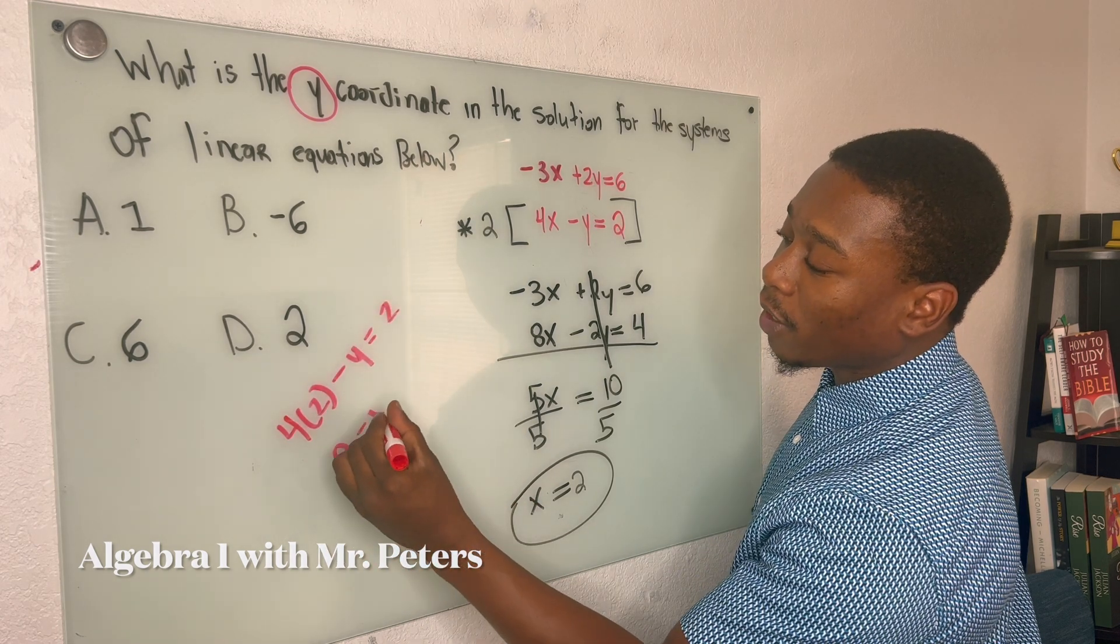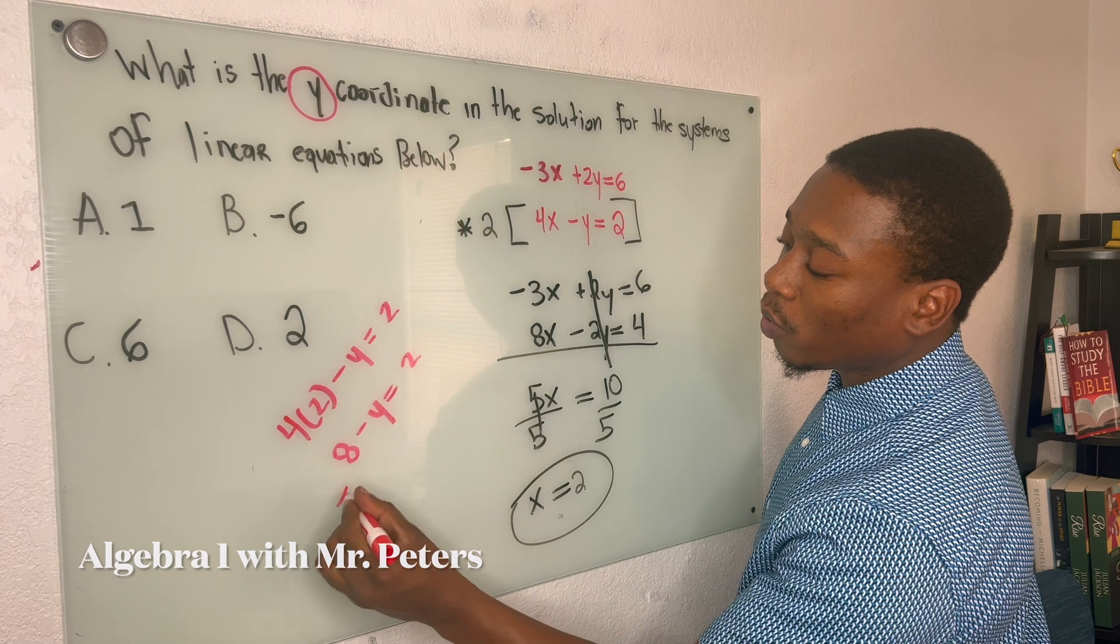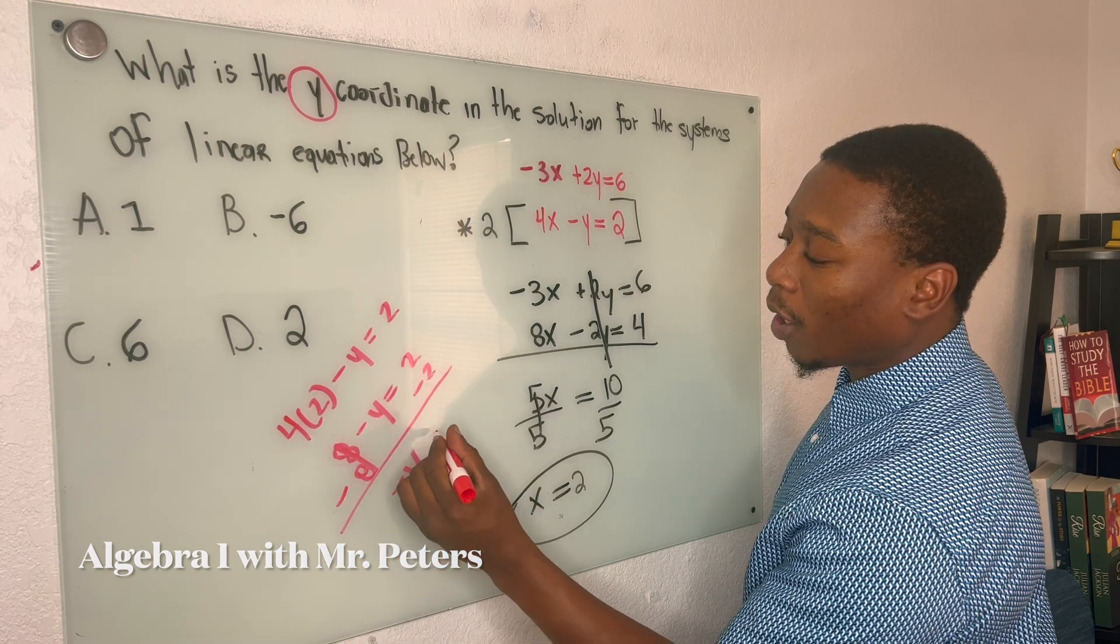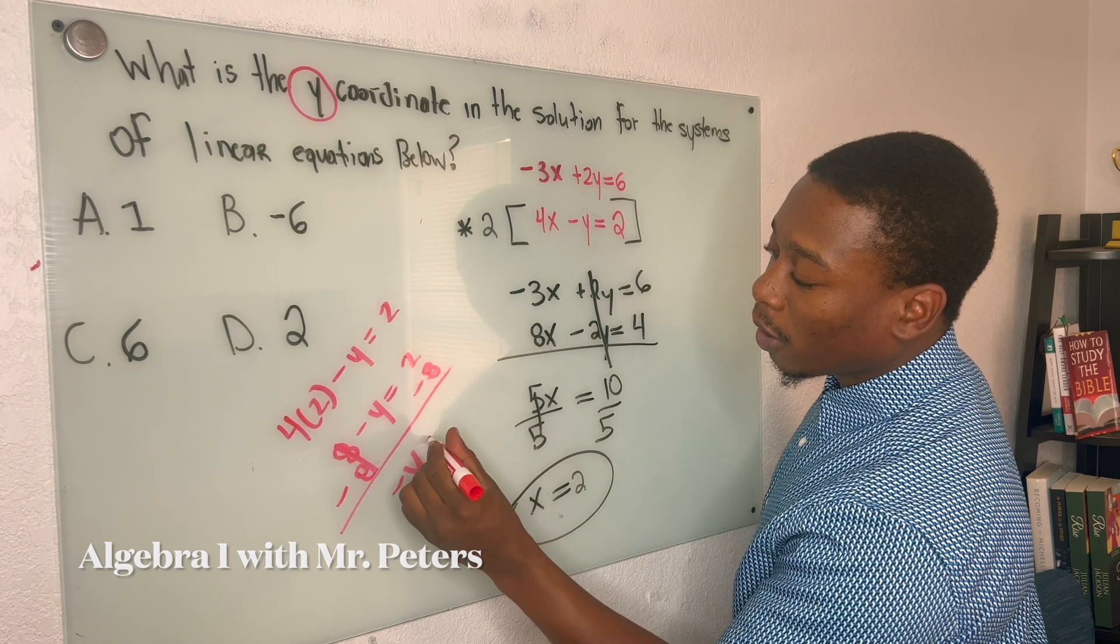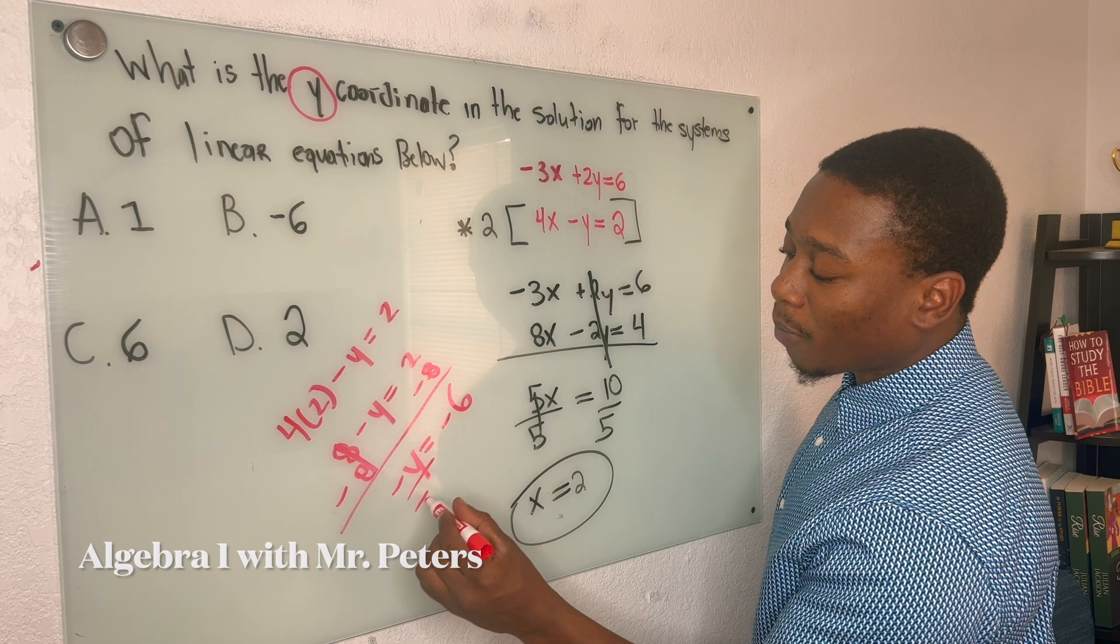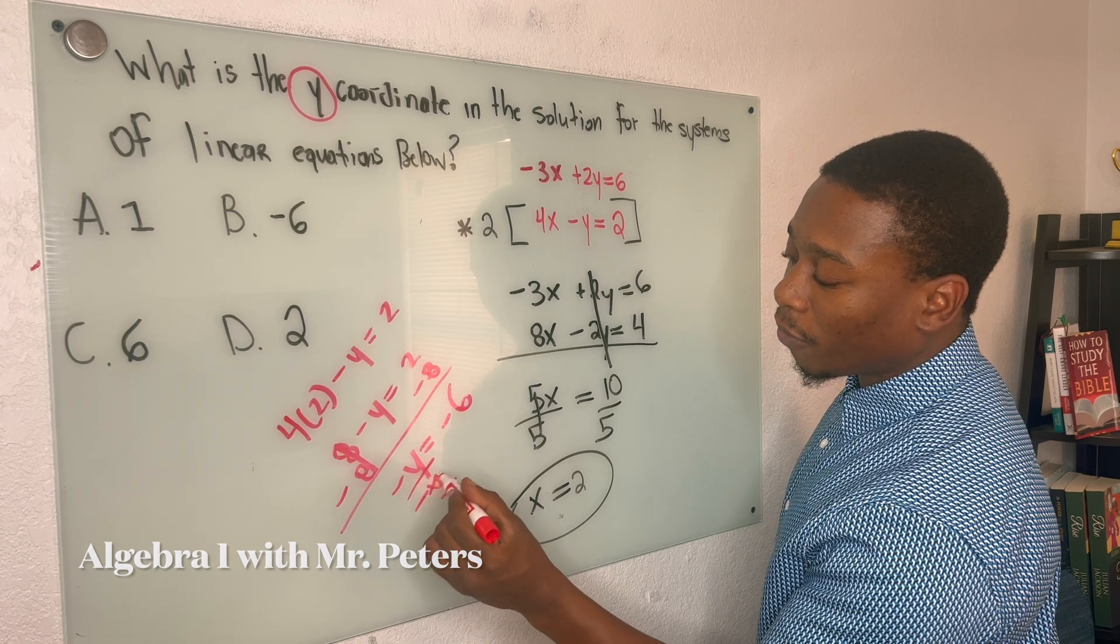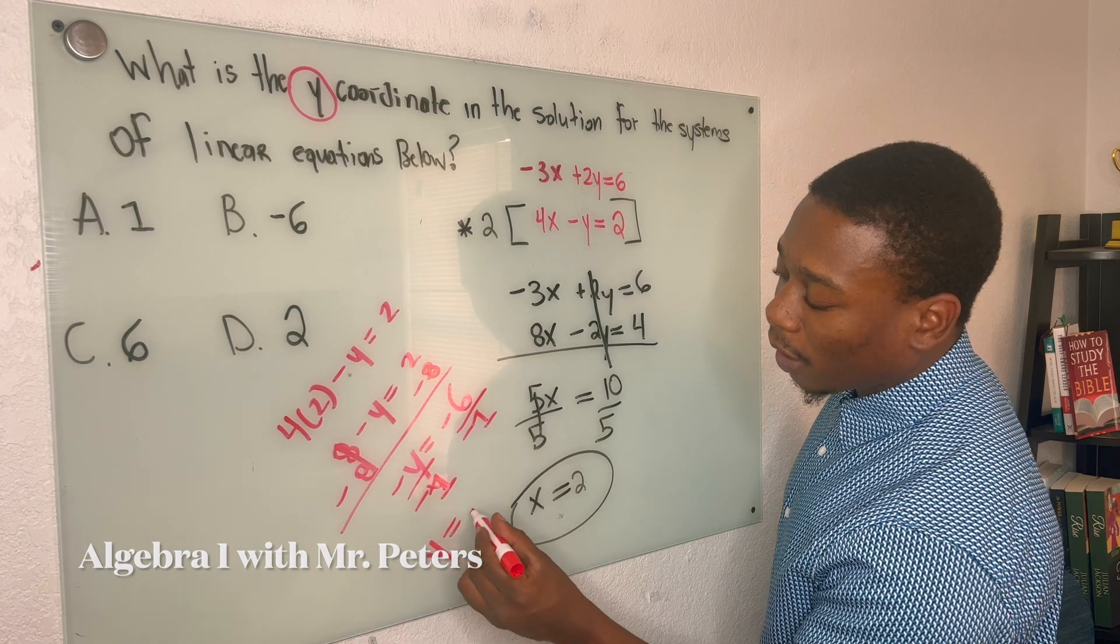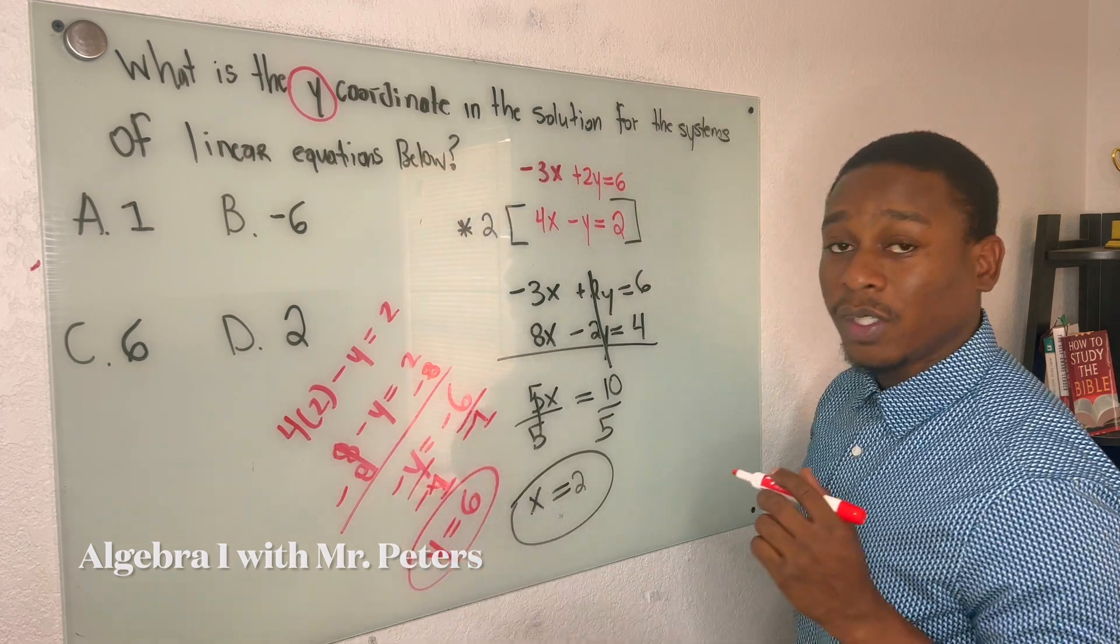We have 8 minus y is equal to 2. When we subtract 8 from both sides, we'll get negative y is equal to negative 6. Y variable can't be negative by itself. So we divide by negative 1. And we know positive y is equal to positive 6.